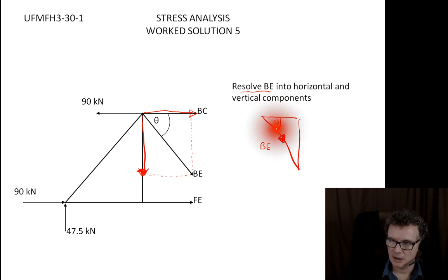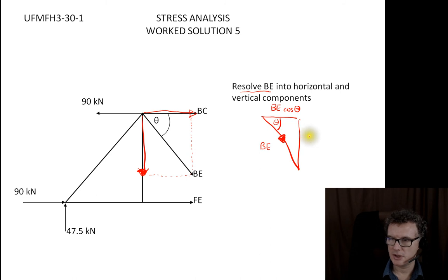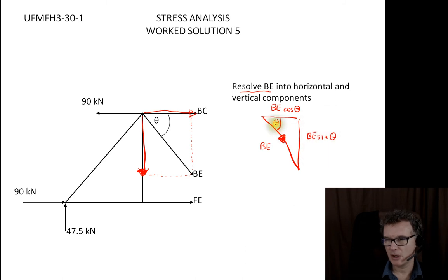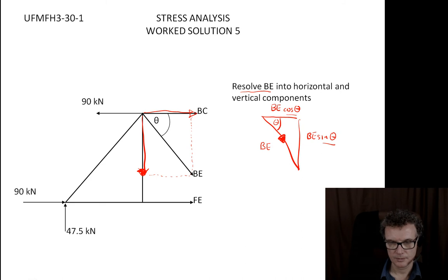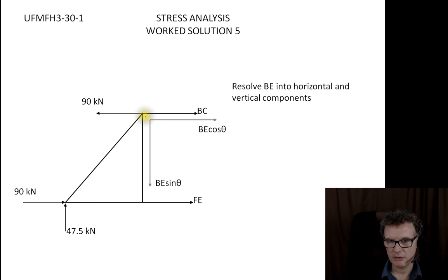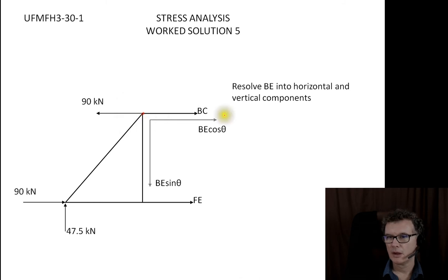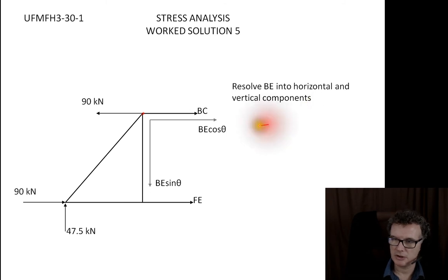With theta defined, the adjacent component is BE·cos θ and the opposite component is BE·sin θ. Since it's a three-four-five triangle, we can use ratios of lengths rather than angles. So I've magically replaced the diagonal force with a horizontal component and a vertical component, both imagined to act at the same point. Now I've got everything ready to apply the equilibrium conditions.